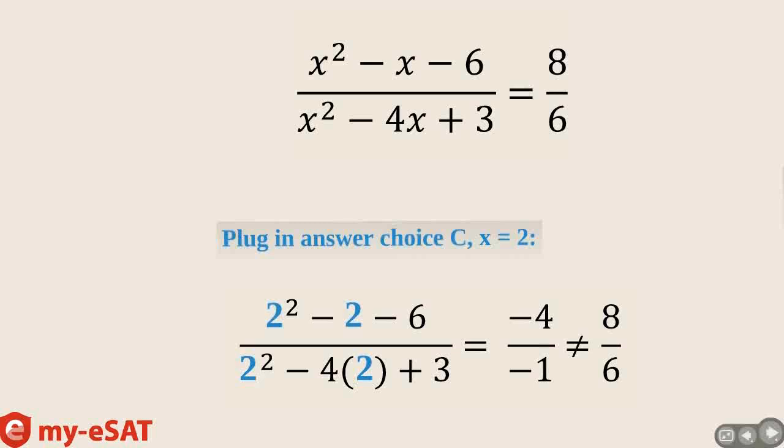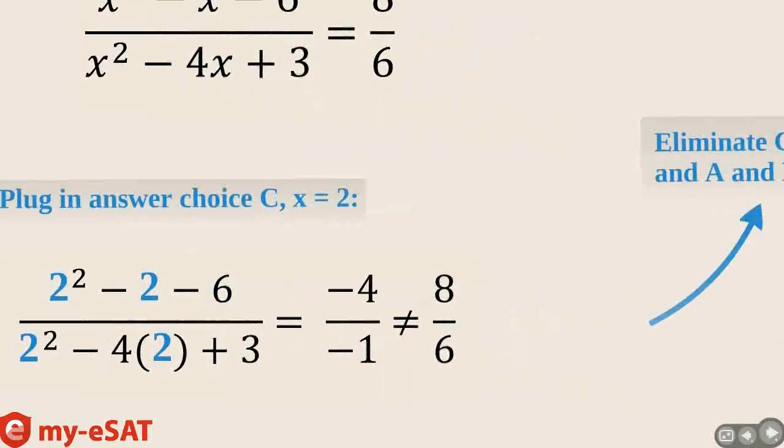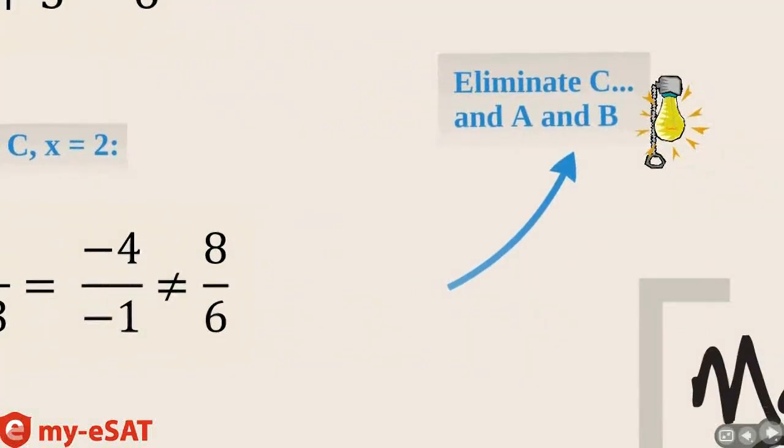This is not the same as 8 over 6. Instead, it is too small. x needs to be bigger for both the numerator and denominators to be larger. So let's go ahead and eliminate answer choice C, and also A and B.